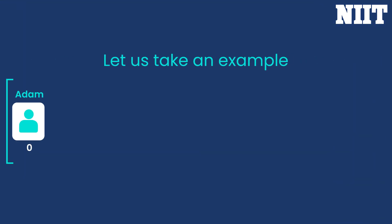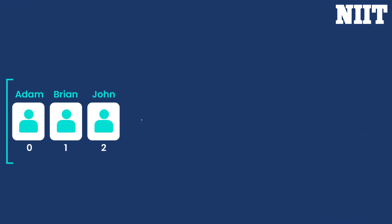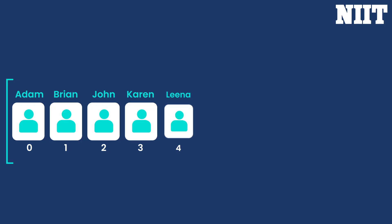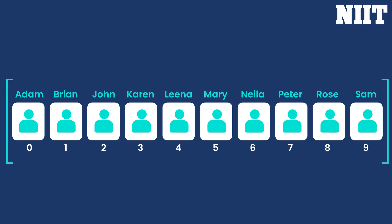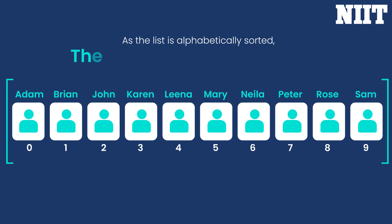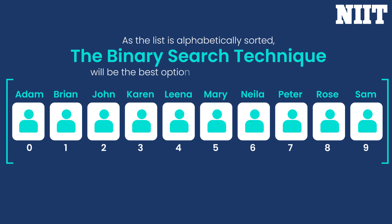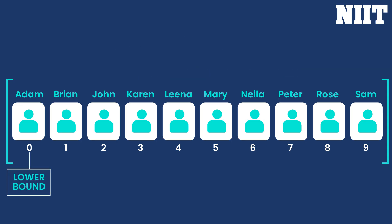Let us take an example where you need to search the record of a student named John from a given list of student records stored in an array. The student names are stored in alphabetical order. As the list is alphabetically sorted, the binary search technique will be the best option. For this list, the lower bound is 0 and the upper bound is 9.